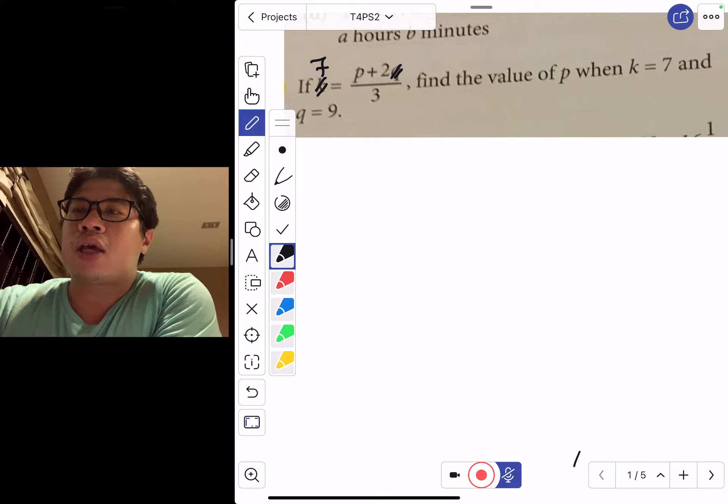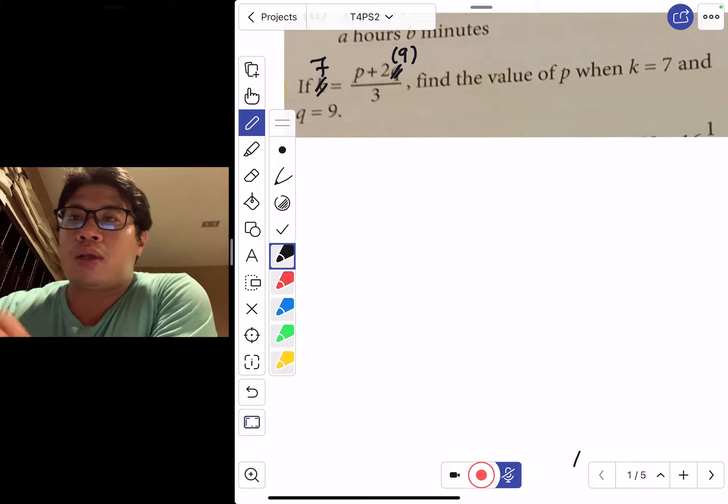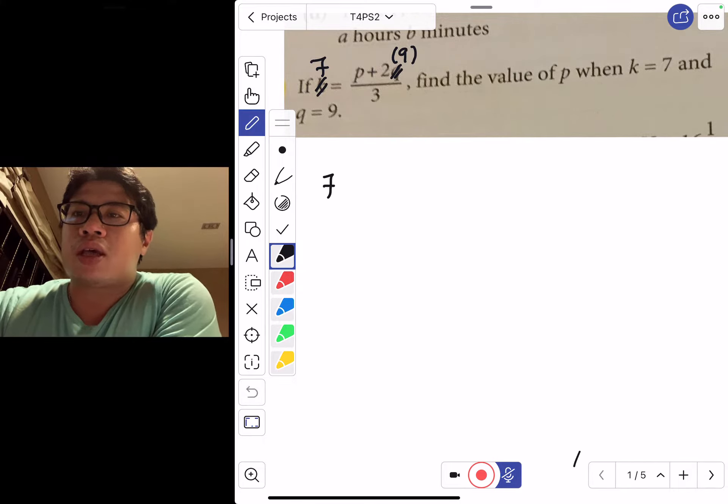Now you can see that q is multiplied by 2, so I'm just going to put a bracket around it. What you have is 7 equals p plus 2 bracket 9 over 3.